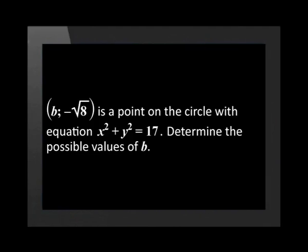Now let's try something more challenging. In the next example, we are given one coordinate and the equation of the circle. We need to calculate the other coordinate. (b, negative square root of 8) is a point on the circle with equation x squared plus y squared equal to 17. Determine possible values of b.